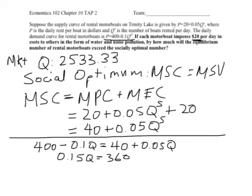and then Q star, we'll call it, remember, it was that social optimum, we usually use that notation, 360 divided by 0.15 is 2,400.